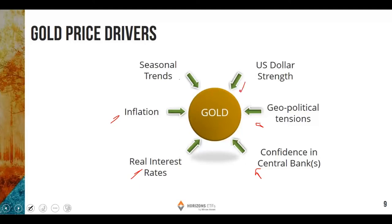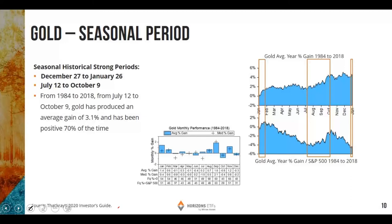Seasonal trends have also been an underlying influence on the price of gold over the long term. Gold has two seasonal periods: one from December 27th to January 26th, largely based upon Chinese consumer demand coming into the Chinese New Year, and another from July 12th until October 9th, based upon increased demand for gold jewelry in the fourth quarter of the year. Seasonal analysis uses algorithms to examine the different annual trends of gold, with every year being different, to produce a composite annual seasonal trend. It also incorporates relative performance compared to the benchmark in order to establish optimal seasonal entry and exit points. Gold is just one of many seasonal sector trends, and there are many others investors can potentially use to gain an edge in the markets.